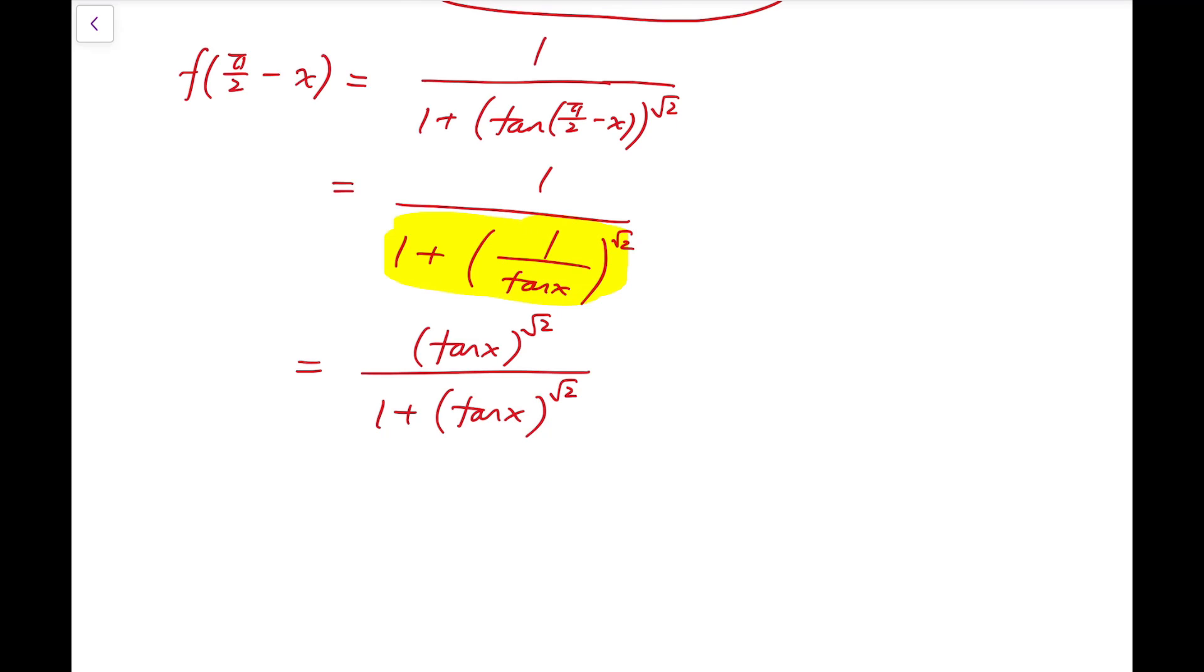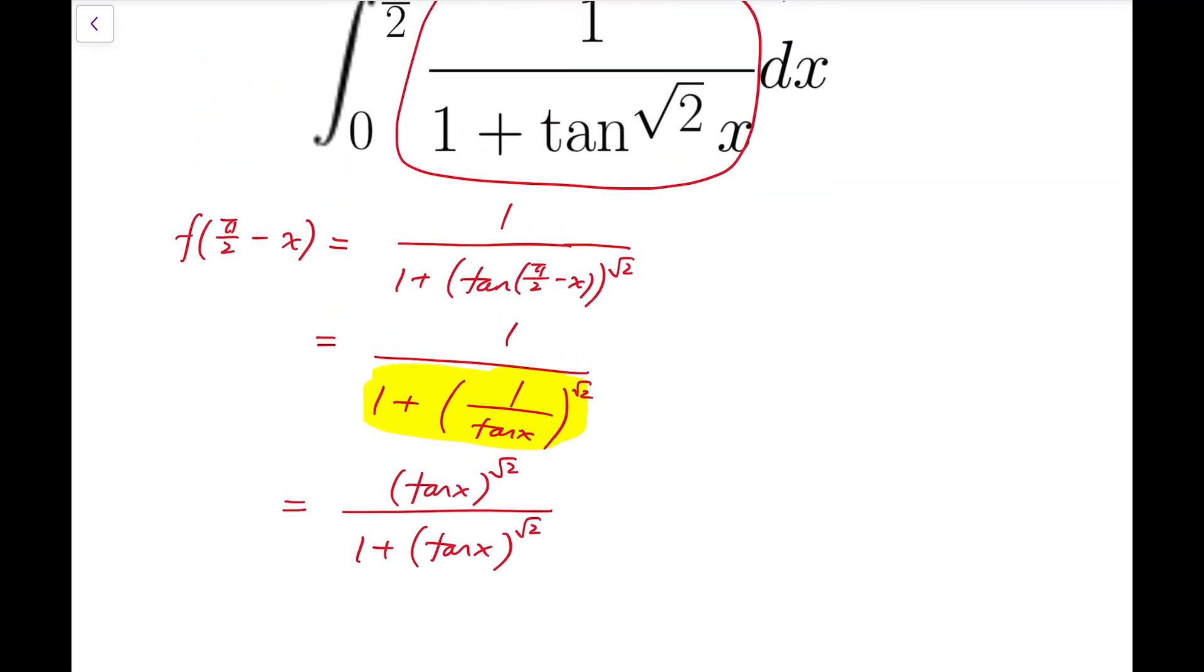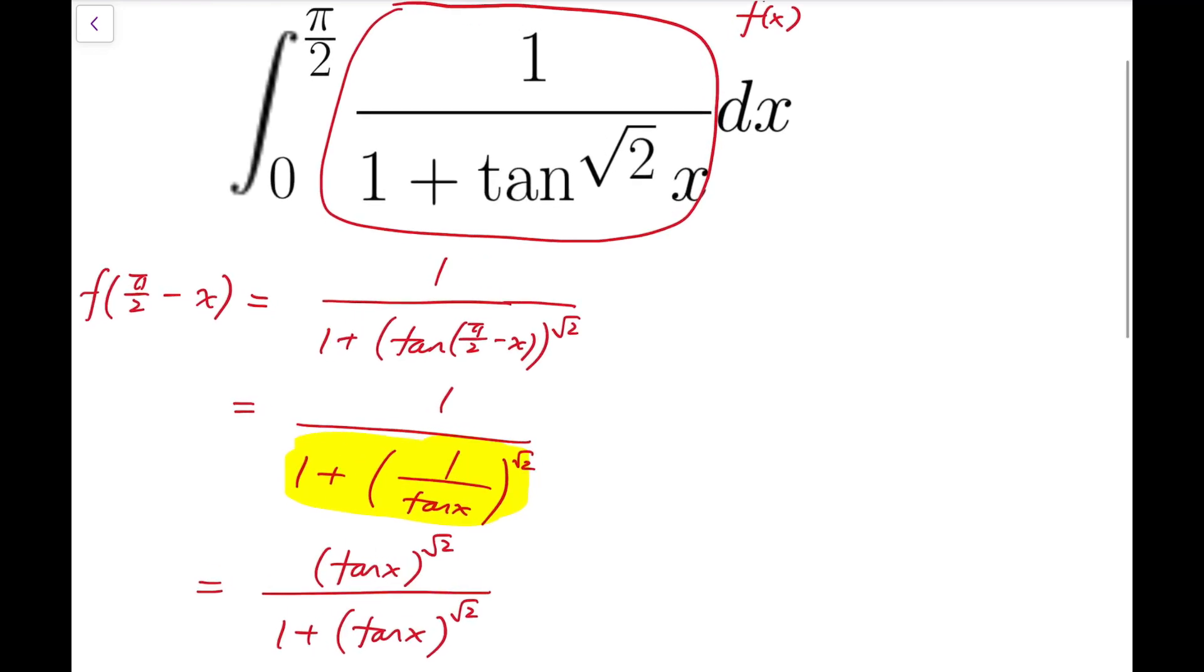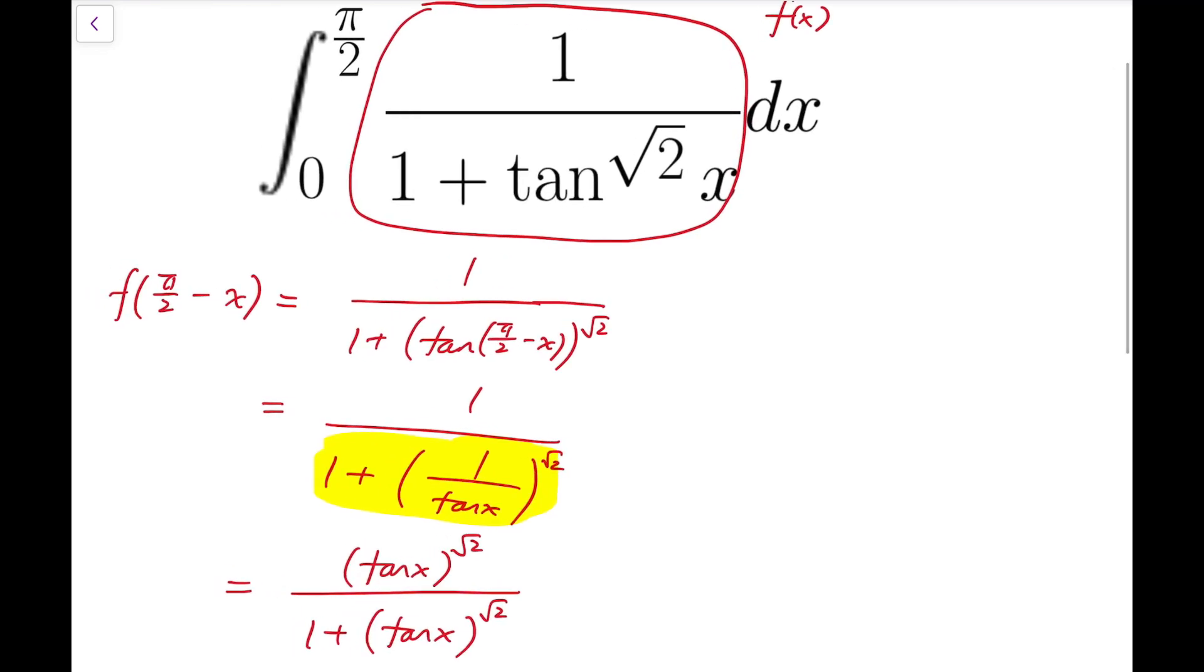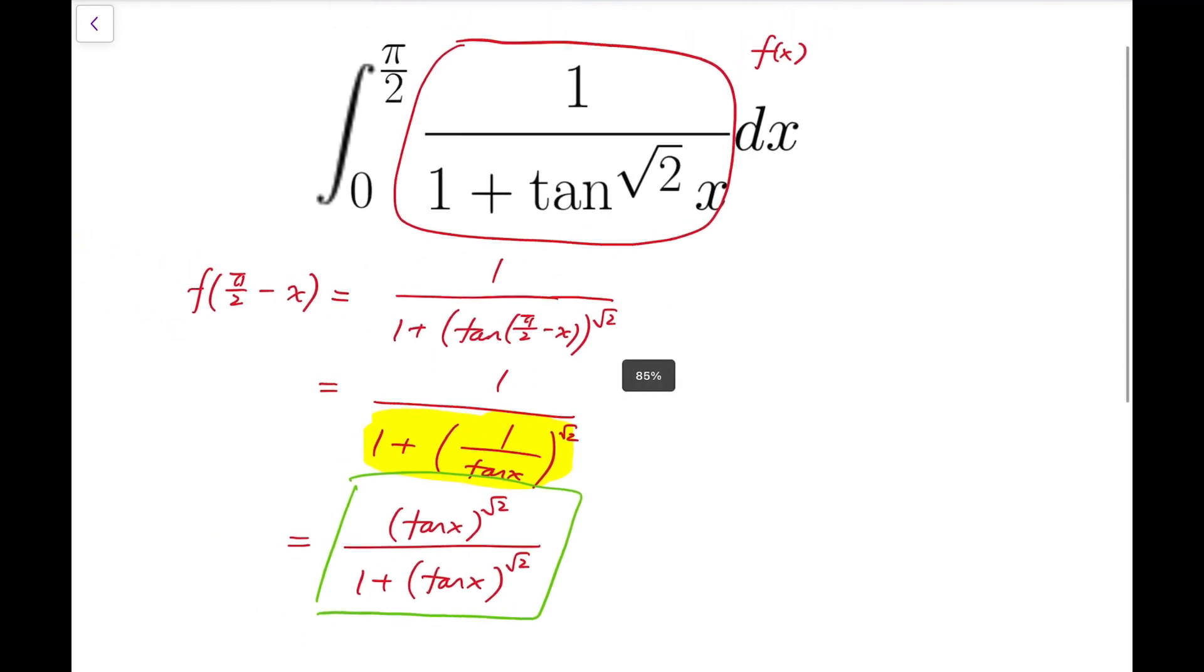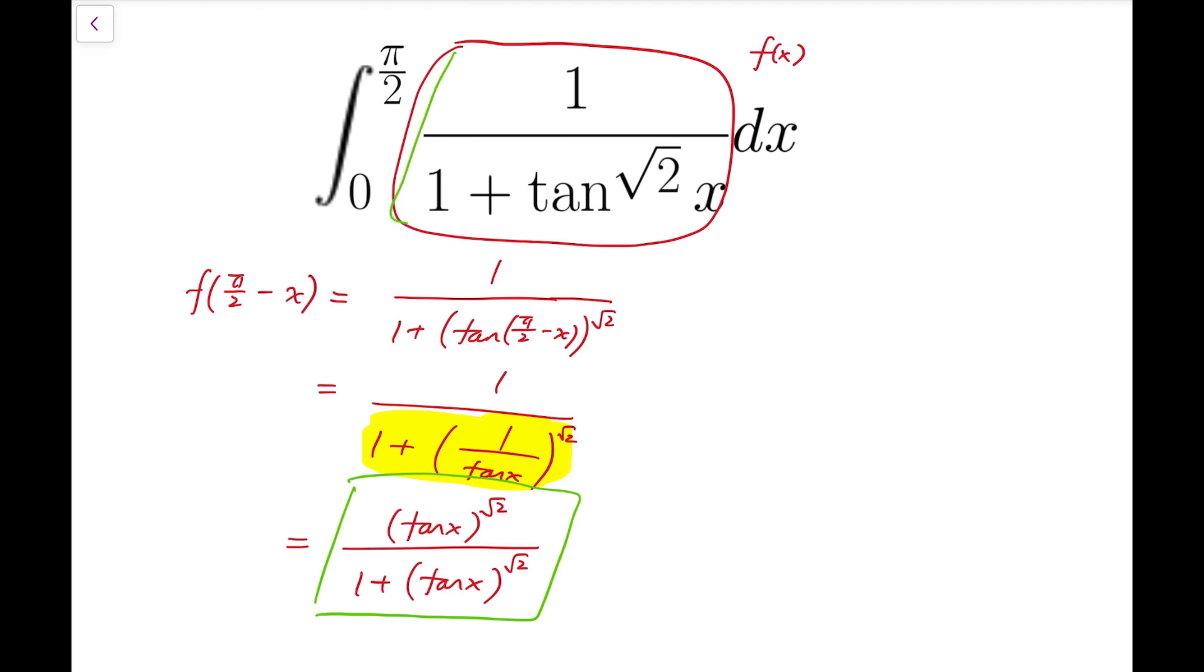So this is very similar to our integrand. And there's one more thing that's very interesting: these two functions, f of x and f of pi over 2 minus x, the two functions labeled in green, actually have sum equal to 1.